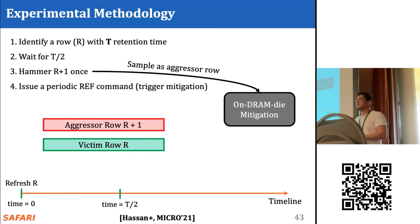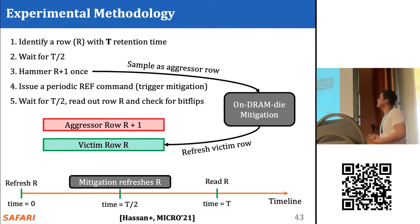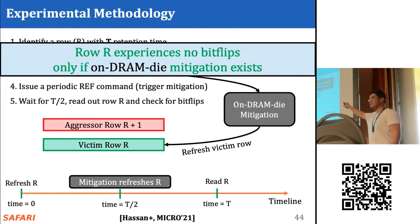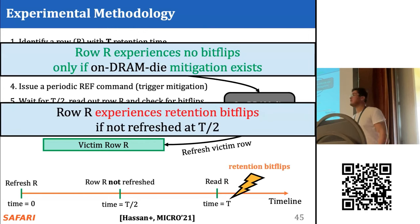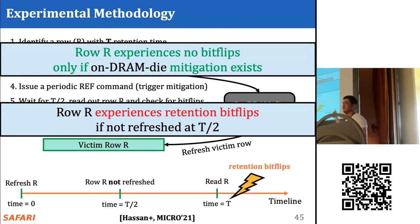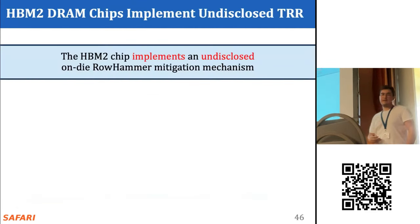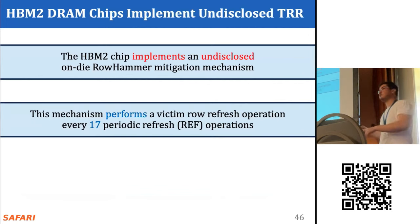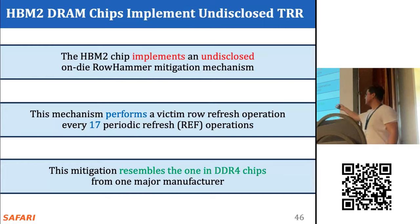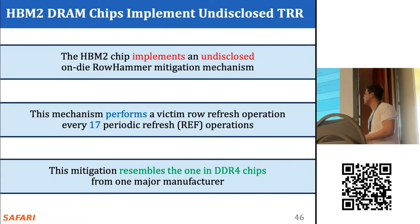The hypothetical mitigation mechanism samples this as an aggressor row activation. We then issue a periodic refresh to trigger the mechanism, expecting it to refresh victim row R. We wait another half T, read row R, and check for bit flips — there will be none if and only if the mitigation mechanism exists and has refreshed R at half T. We performed this experiment and found that the HBM2 chip implements an on-die mitigation mechanism that performs a victim row refresh after every 17 periodic refresh operations, resembling a mechanism prior work found in a real DDR4 chip from one manufacturer.